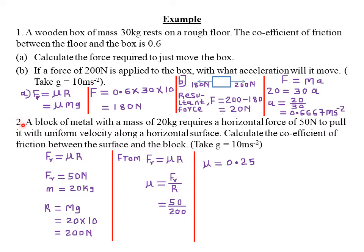Question two: a block of metal with a mass of 20 kg requires a horizontal force of 50 newton to pull it with uniform velocity along a horizontal surface. Because the block is being pulled with uniform velocity, the force of 50 newton used to pull the block must be equal to the frictional force. Moving at constant velocity means the frictional force equals the pulling force, since friction is the force that must be overcome for the block to move.